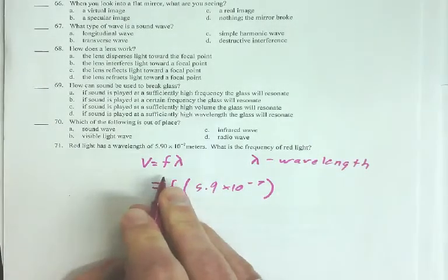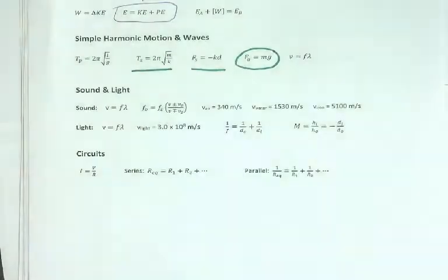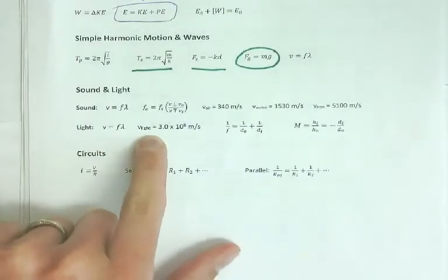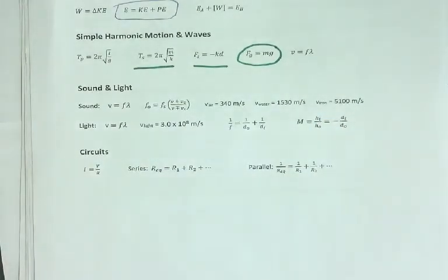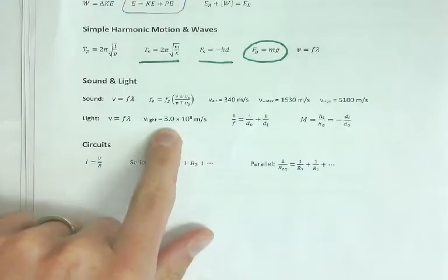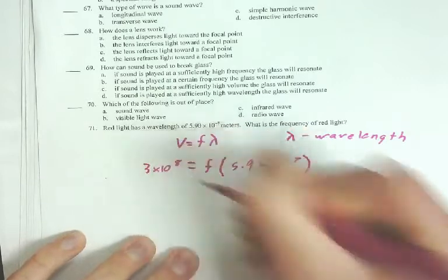So V equals F lambda. What am I going to use for the velocity? There's lots of velocities here: the speed of light, the speed of sound through air, speed of sound through water, speed of iron. There's a lot of different velocities here. So we need to figure out what is red. Red is light, so this is how fast it goes. The number I plug in for V is 3 times 10 to the 8th.